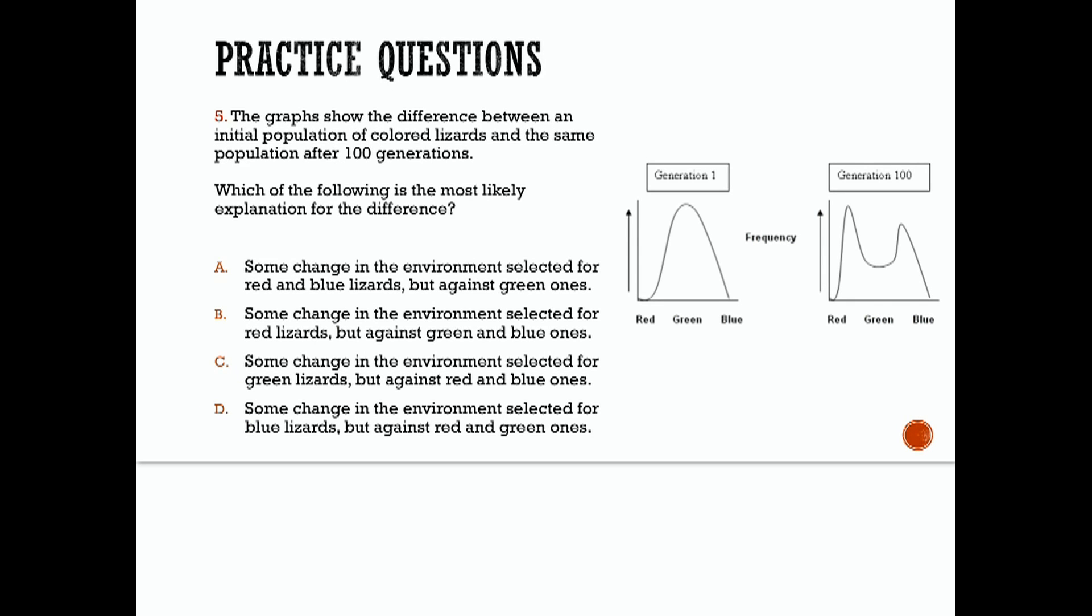Number five, the last practice question in our biology series. These graphs show the difference between an initial population of colored lizards and the same population after 100 generations. Which of the following is the most likely explanation for this difference?